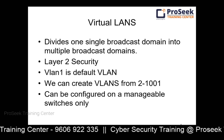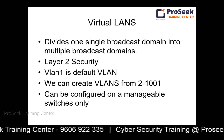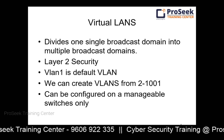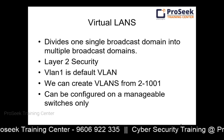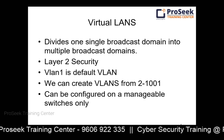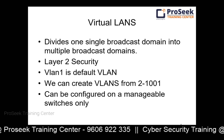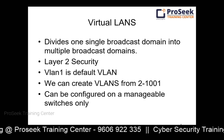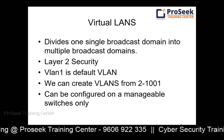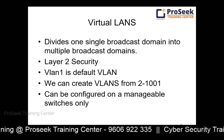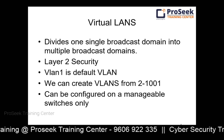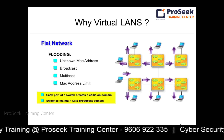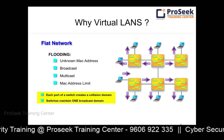VLAN 1 is the default VLAN in any switch. On business class switches, we can create our own virtual LANs. For Cisco switches, we can create VLANs from 2 to 1001, but the maximum limit is up to 4096 VLANs in a single layer 2 network. VLANs are a feature only available on manageable or programmable switches, not general home switches.